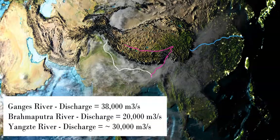Heading southeast to Asia, there are three very large rivers covering both India and China. The Ganges, shown in white on the map, has a discharge of 38,000 cubic meters per second. The Yangtze, shown in blue and flowing through China, has an average discharge of around 30,000 cubic meters per second. The Brahmaputra, shown in pink, has a discharge of around 19,800 to 20,000 cubic meters per second. All three are historically significant and support large populations.